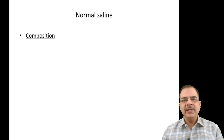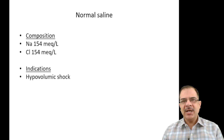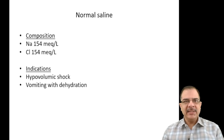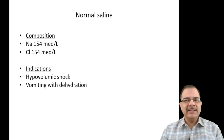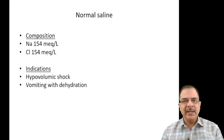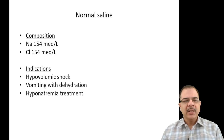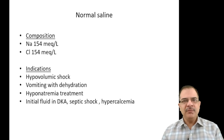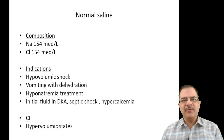Normal saline contains 154 mEq/L each of sodium and chloride. It is the IV fluid of choice for hypovolemic shock and vomiting with dehydration. Normal saline produces a slight acidosis, which corrects metabolic alkalosis caused by vomiting. It is also the initial fluid for diabetic ketoacidosis, septic shock, hyponatremia treatment, and hypercalcemia. Contraindication is hypervolemic states.